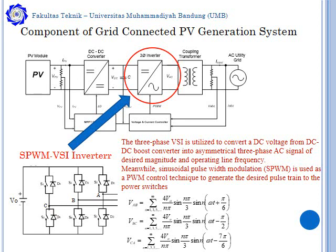The SPWM voltage source inverter, 3-phase, is utilized to convert DC voltage from the DC-DC boost converter into a 3-phase AC signal of the desired magnitude and operating line frequency. Meanwhile, the sinusoidal pulse width modulation SPWM is used as the PWM control technique to generate the desired pulses to the power switches.